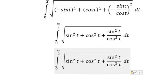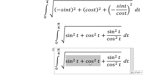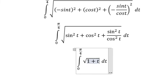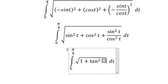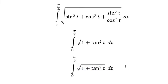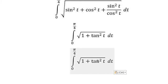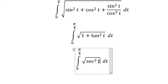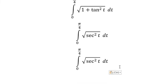We know that sin²(t) plus cos²(t) equals one. The remaining term we change to tan²(t). So we have 1 plus tan²(t), which equals sec²(t). Taking the square root of sec²(t) gives us the absolute value of sec(t).